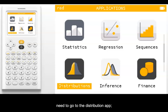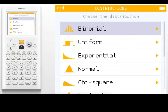To solve this problem, we need to go to the distribution app. So I'll select OK, and we're going to choose the first option, binomial.